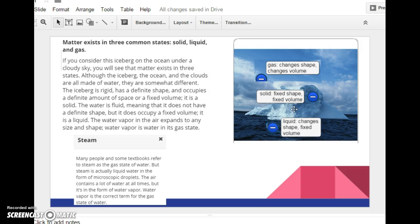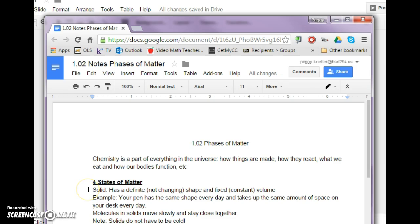So, solid liquid gas isn't necessarily how it feels, but we have to look at the chemistry of it. So, we say a solid has a definite, non-changing shape and a fixed or constant volume. It takes up the same amount of space. The molecules move slowly and stay close together.